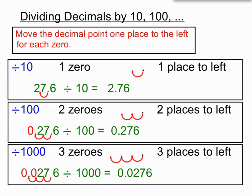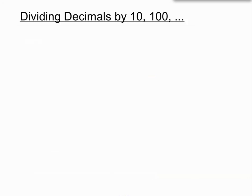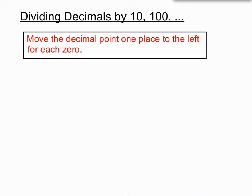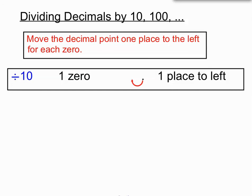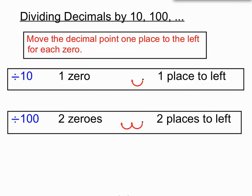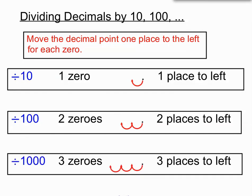But in the end the pattern holds. When we're dividing, we move the decimal point one place to the left for each zero. If we're dividing by 10, it moves one place to the left. Dividing by 100 with two zeros, it moves two places to the left. Dividing by 1000, the decimal point moves three places to the left.